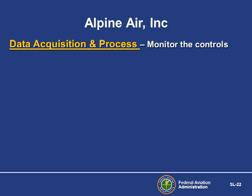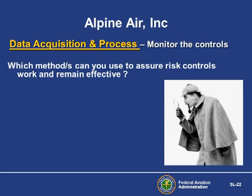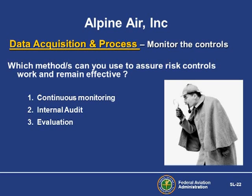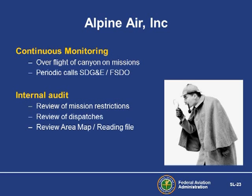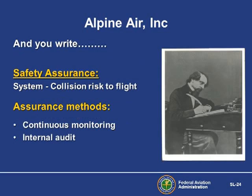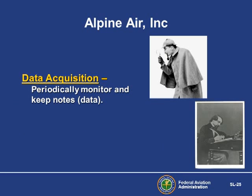How do you do that? You have many options. Your SMS will help you to consider which method might be most effective – you can choose more than one. Using your background and experience, you decide that continuous monitoring, checking the status of the power line by overflying the canyon during good visibility missions, becoming a squeaky wheel at the power company, and internal audits fit your needs best. Now that you have made your monitoring decision, break out the pen and paper and document it.